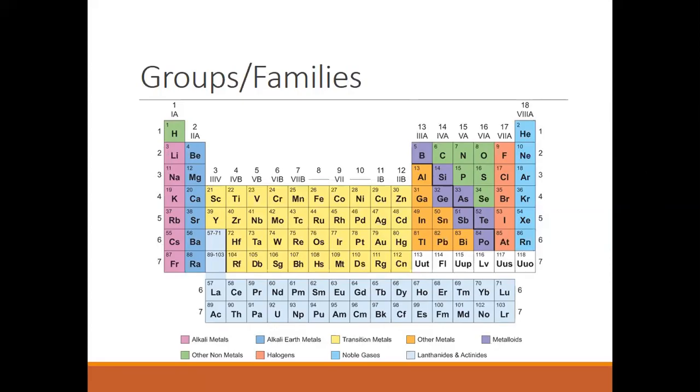So the groups or families are also known as vertical columns. And as you look across, there happen to be 18 of them. And the way that they're grouped, they're grouped by similarities, how they react, similarities in properties, and most importantly, similarities in the number of valence electrons.